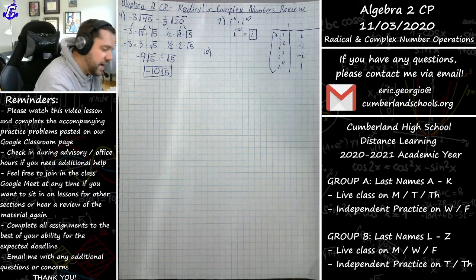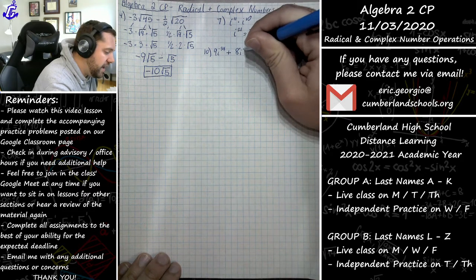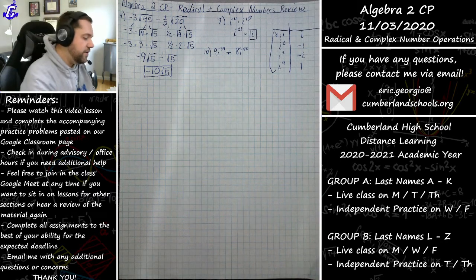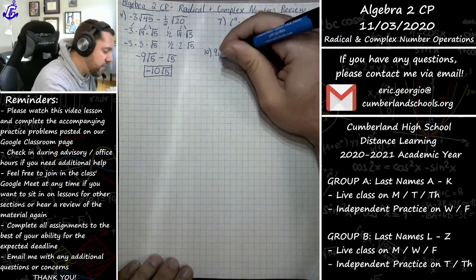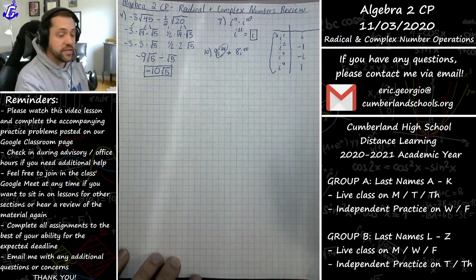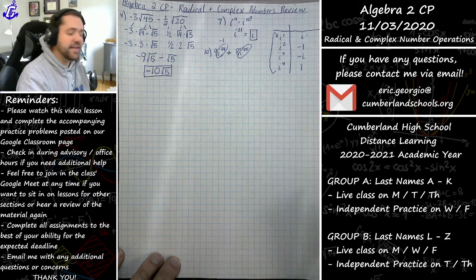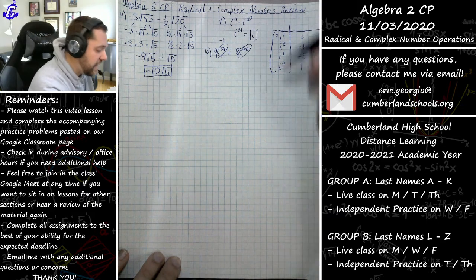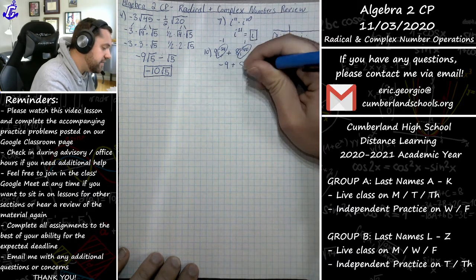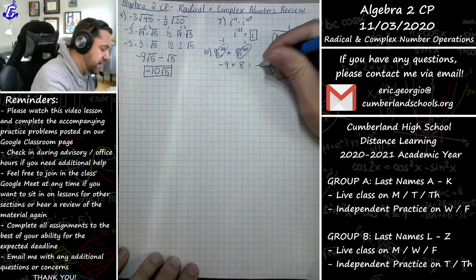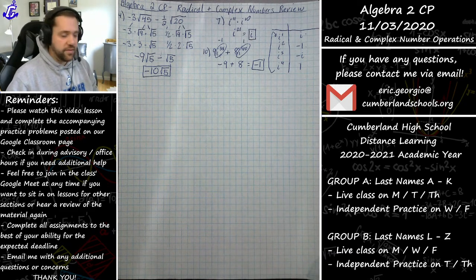Problem 10: 9i^34 plus 8i^80. For i^34, the closest multiple of 4 is 32, so 33 is negative i and 34 is negative 1. For i^80, since 80 is a multiple of 4 (4 times 20), that equals 1. So this becomes 9 times negative 1 plus 8 times 1, which is negative 9 plus 8, giving negative 1. It looks scary but it's straightforward once you tackle it.